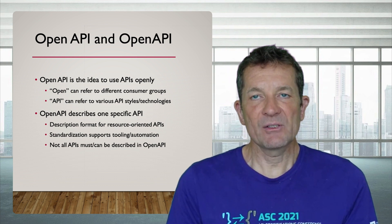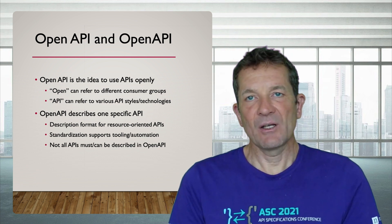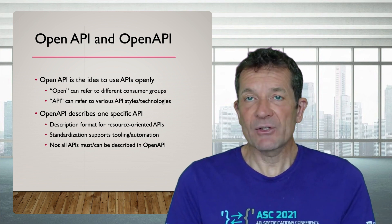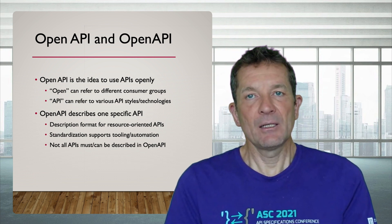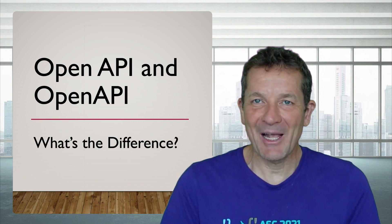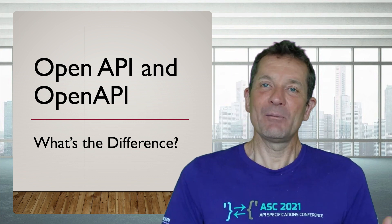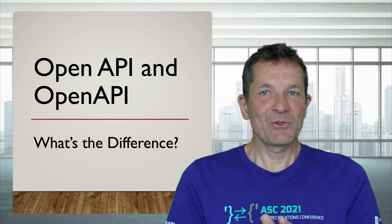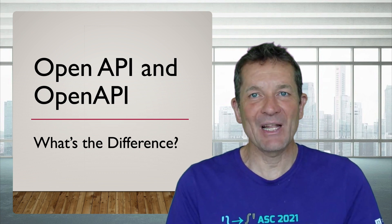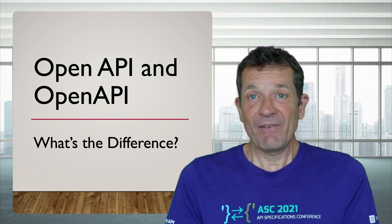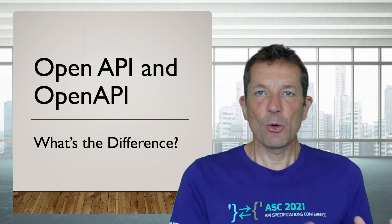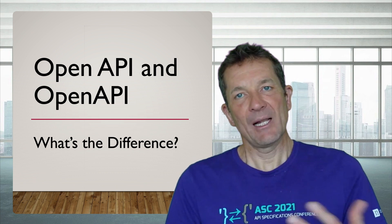Not all APIs in your organization need to be described in OpenAPI — it is just one format. There are others: AsyncAPI for event-driven APIs, and GraphQL as another machine-readable API format. These are different kinds of APIs that complement OpenAPI in open API landscapes. The naming choice of OpenAPI was never ideal, but it can't be changed now. Hopefully this video helps clarify the relationship between open APIs and OpenAPI.